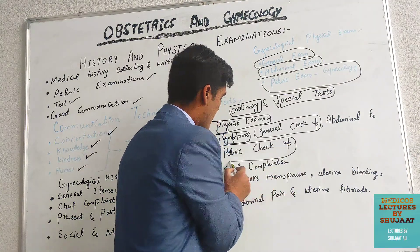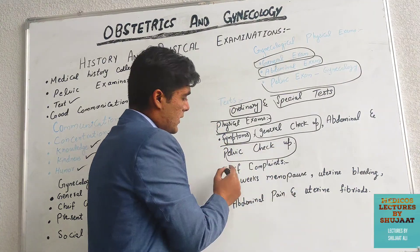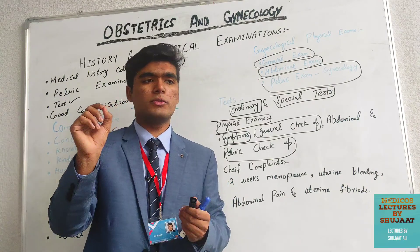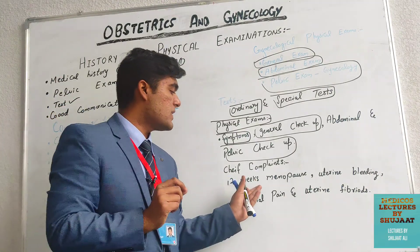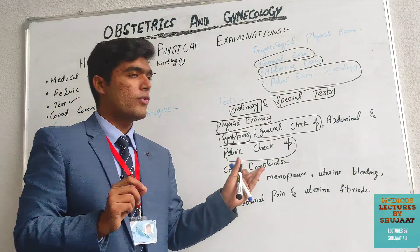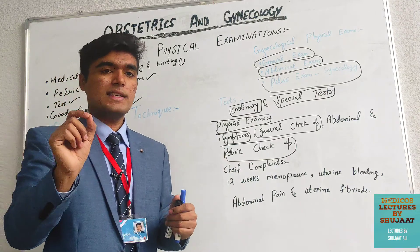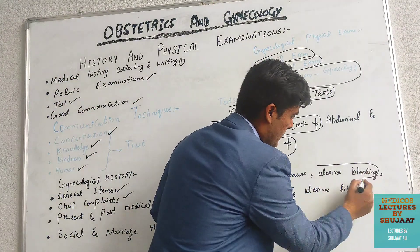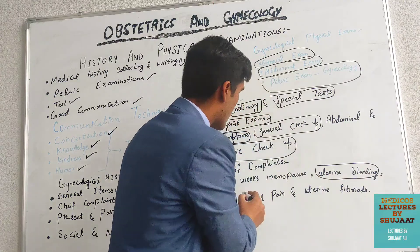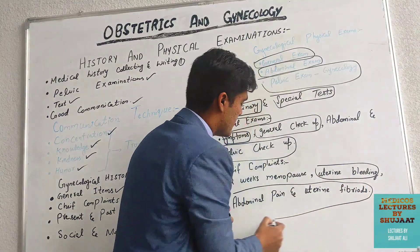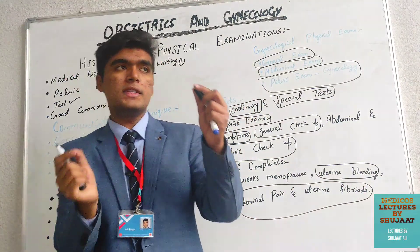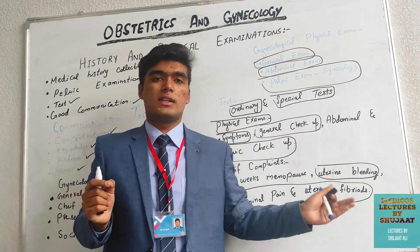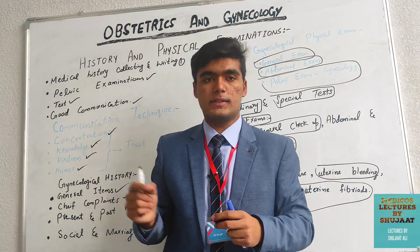In the pelvic checkup, the chief complaints to remember in gynecology are: a patient with 12 weeks of amenorrhea, severe uterine bleeding, abdominal pain, or uterine fibroid. If a patient has one of these conditions or symptoms, they have a chance of having a severe disease.